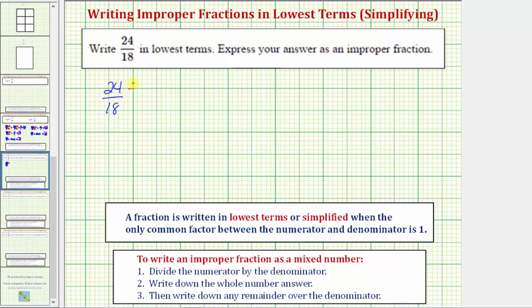Remember when we divide or multiply the numerator and denominator by the same number, we get an equivalent fraction. So 24 divided by six equals four and 18 divided by six equals three.